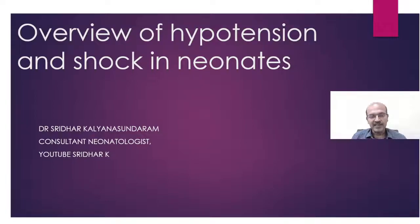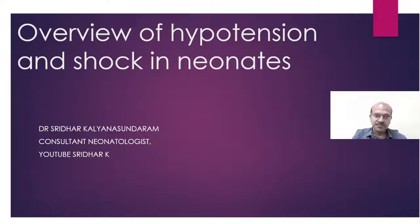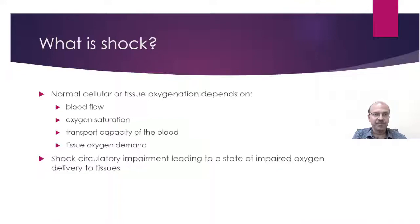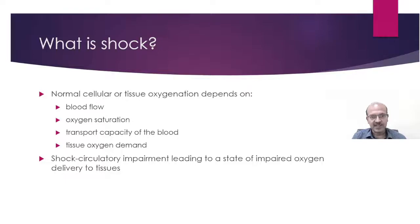At a later stage I will try to do some case-based discussion on this as well, and I will be presenting individual updates on inotropes — how they function, what dose to use and how we should use them. So we know that normal cellular or tissue oxygenation depends on various components: the blood flow, oxygen saturation, transport capacity for oxygen in the blood, and the tissue oxygen demand. I would refer you to my playlist on oxygenation where most of these aspects are discussed in detail, especially the first video on why oxygen is important.